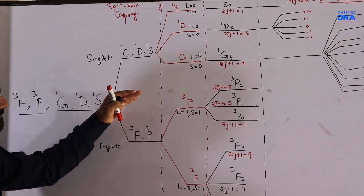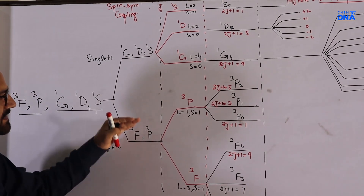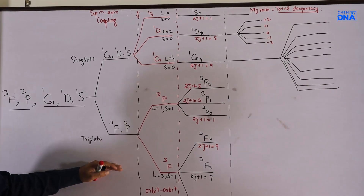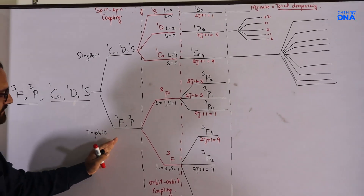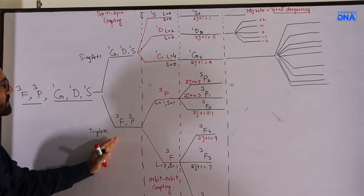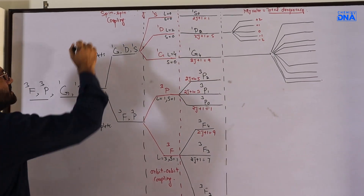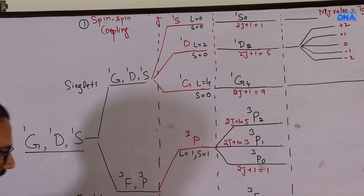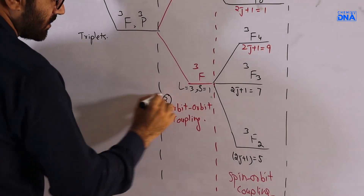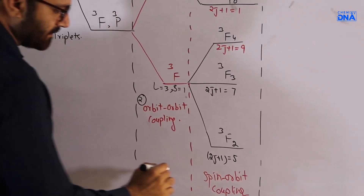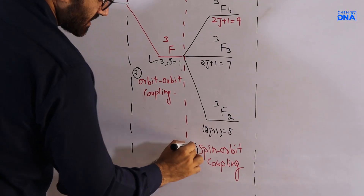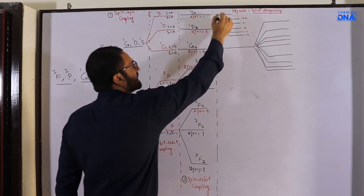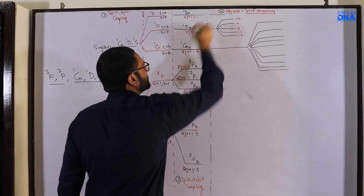This is a representation of the splitting pattern in the d2 system. Note that coupling stage one is spin-spin coupling, stage two is orbit-orbit coupling, stage three is spin-orbit coupling, and at the fourth stage you will get the mJ values.